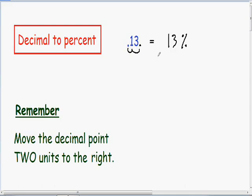One way to double check your answer is that your decimal should always be smaller than your percentage. Notice how .13 is certainly smaller than our percentage of 13%. That's a quick way to check that you moved the decimal point in the right direction.